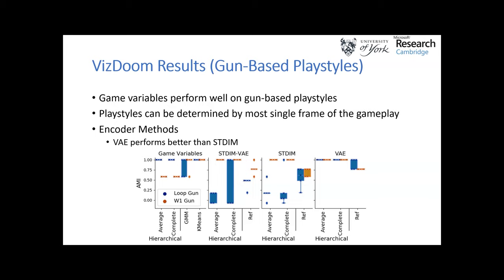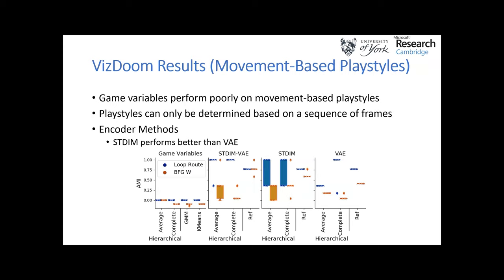Looking at our VisDoom dataset, initial experiments focused purely on playstyles separated by weapon choice. Game variables encapsulated these well, giving good clustering performance. The encoder setups also performed reasonably well, but the VE setup performed best — likely because individual frames can reveal the playstyle by showing what weapon the player holds, making frame-by-frame information most suitable. For player movement-based strategies, however, game variables showed a significant drop in performance, while encoding systems still performed reasonably well, with ST-DIMM outperforming VE because determining movement playstyle requires considering a sequence of frames.